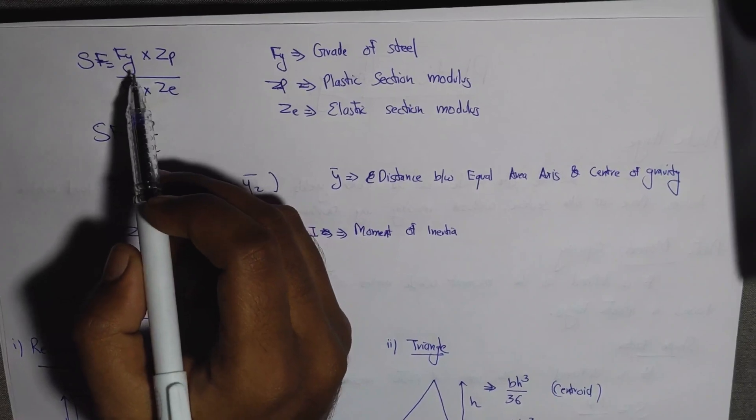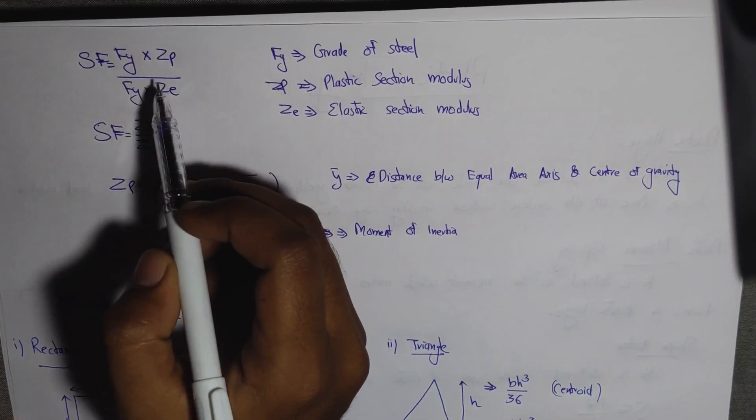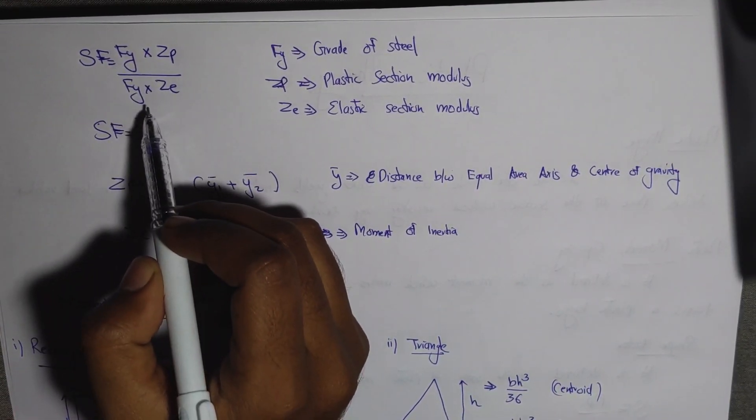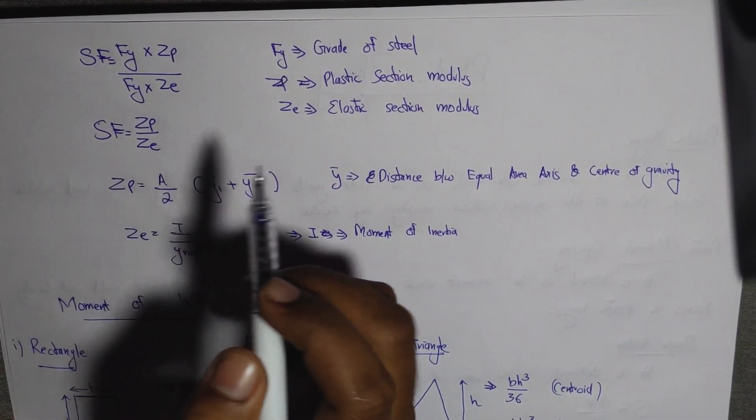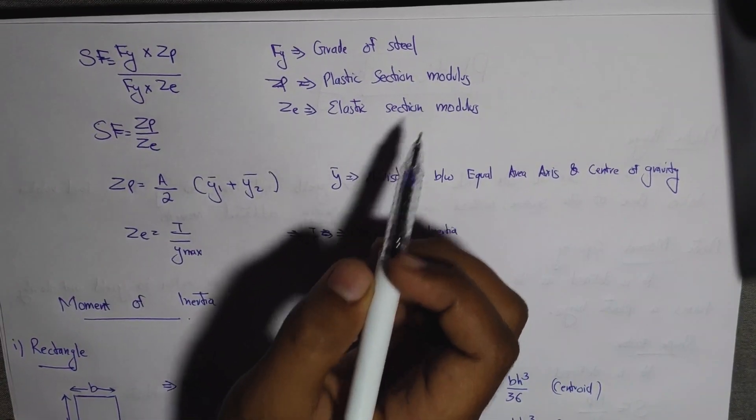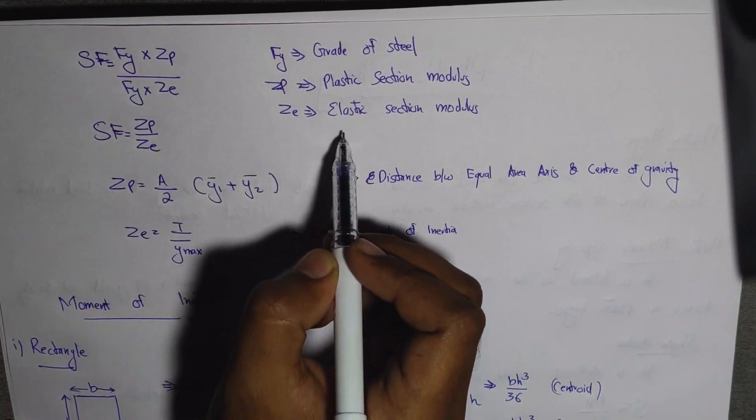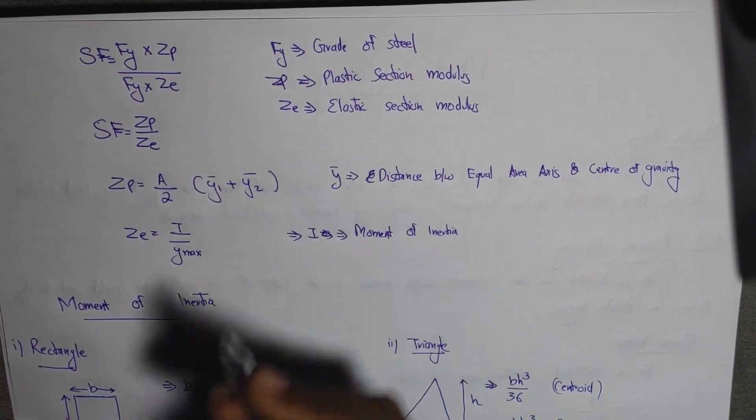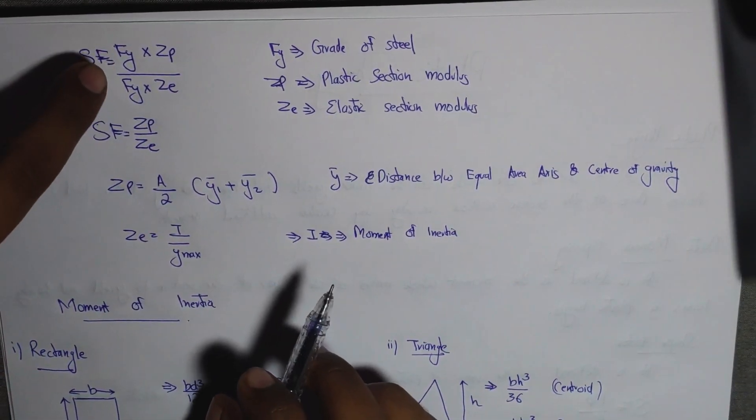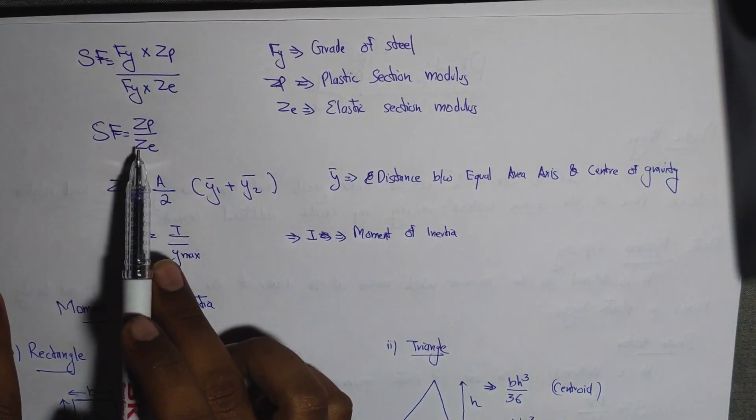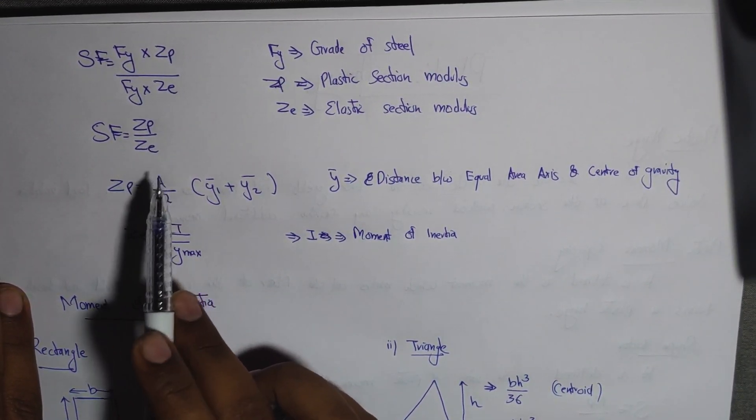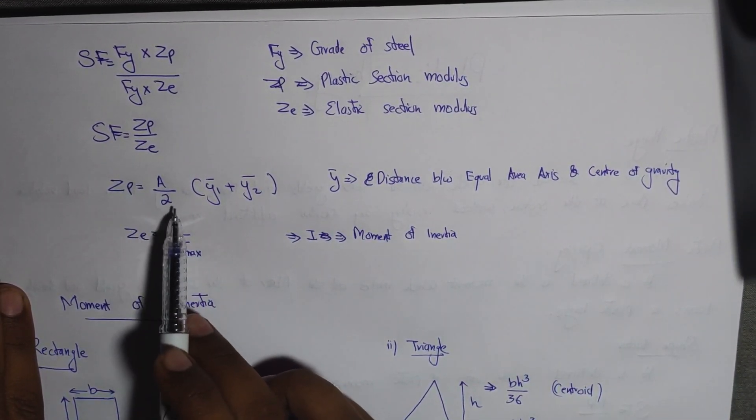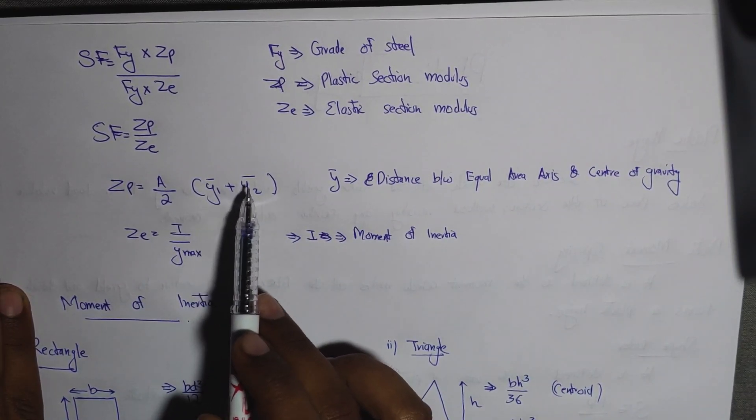Mp equals Fy times Zp, where Fy is the grade of steel. Zp is the plastic section modulus and Ze is the elastic section modulus.